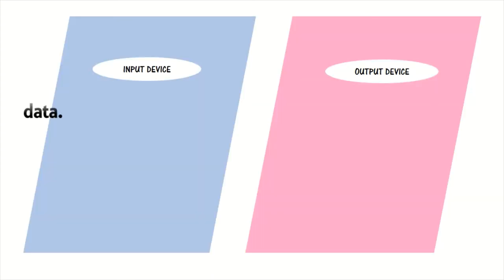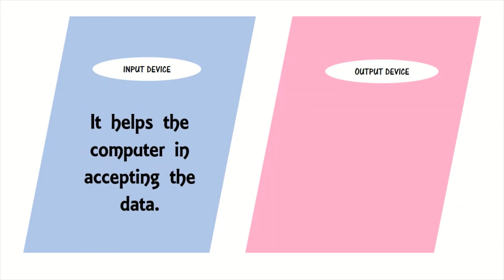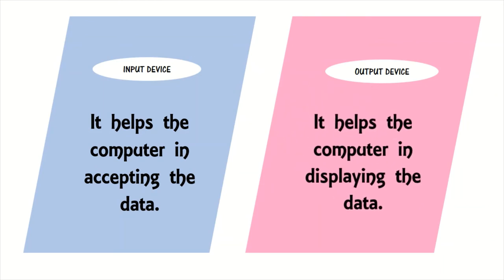Input device: It helps the computer in accepting the data. Output device: It helps the computer in displaying the data.